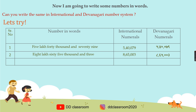Now you can try the third one on your own. Try to write it in both international and Devanagri systems. The answer in the international system is 6, 1, 0, 0, 0, 9, 1, 1, 1 — that is 61000911. In Devanagri numerals it is also 61000911. Now we are moving on to multiple choice questions.